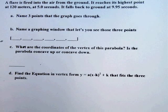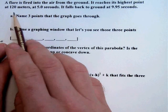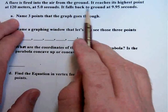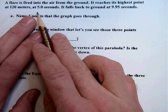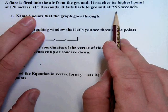Now we're going to take everything that we've done up to this point and put it into one problem. So let's go ahead and start. A flare is fired into the air from the ground. It reaches its highest point at 120 meters at 5 seconds. It falls back to ground at 9.95 seconds.